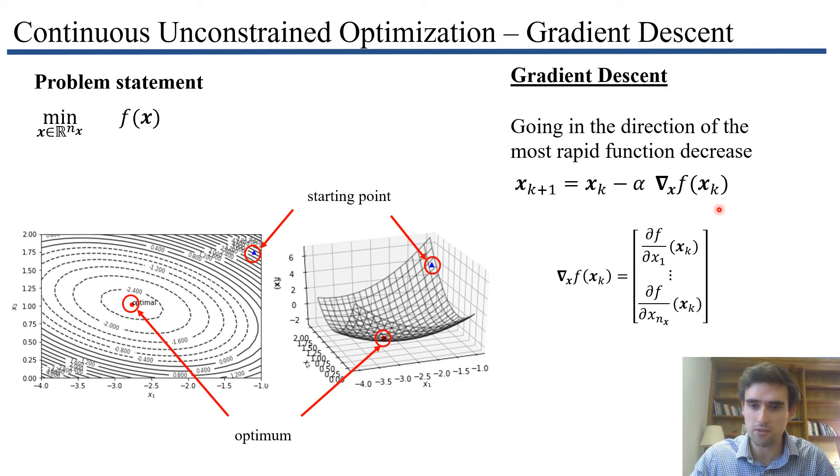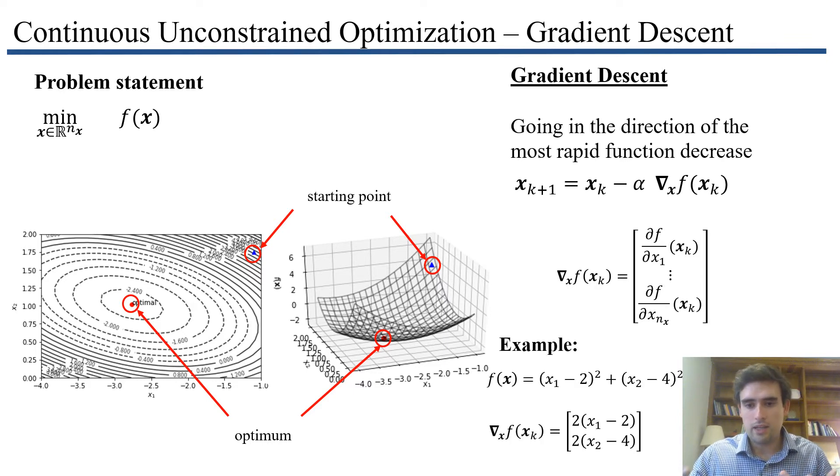If you're a bit rusty on calculus, the gradient is the column vector of first derivatives - the derivative of my function with respect to my first dimension, and so on all the way to my last dimension. For example, if this is my function, a quadratic function f(x) = x1² + (5x2)², I take the derivative with respect to x1, this term goes away and I get the derivative of this term. Then for the second component, I get the derivative with respect to x2.